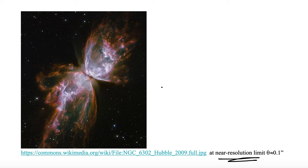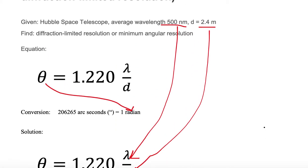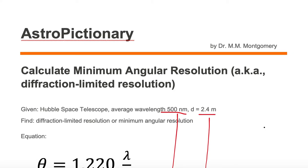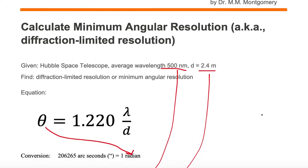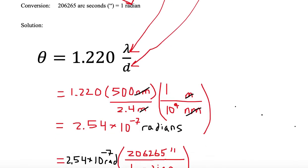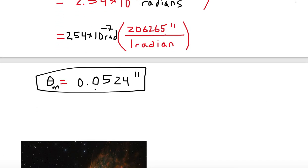So it's not at the limit. We are at the near resolution limit, or double the limit value of 0.1 arc seconds. But this gives you an idea of how to calculate the minimum angular resolution or the diffraction-limited resolution. Our example is the Hubble Space Telescope. The Hubble Space Telescope will be able to resolve things in the sky so long as the angle between two objects is greater than 0.0524 arc seconds.